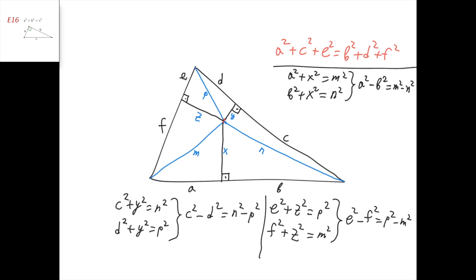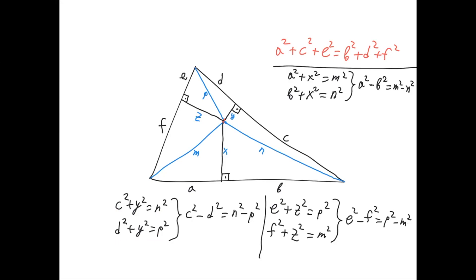Similarly, when we apply the Pythagorean theorem for this triangle and this triangle, we get two equations, and when we subtract one from the other, y² cancels out, and we get c² − d² = n² − p².